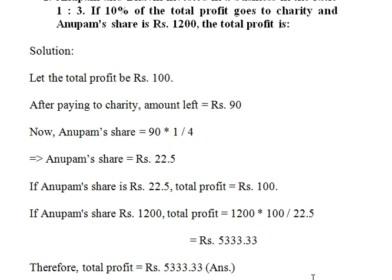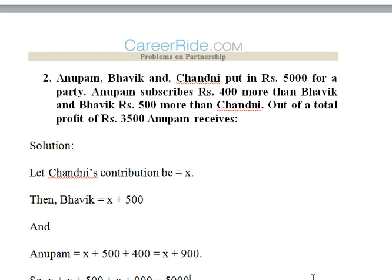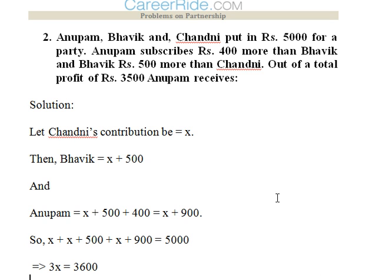Second question: Anupam, Bhavik, and Chandni put in rupees 5000 for a party. Anupam subscribes rupees 400 more than Bhavik, and Bhavik rupees 500 more than Chandni. Out of a total profit of 3500, how much does Anupam receive? We have to calculate everyone's contribution in terms of Chandni's contribution, which we assume as X.